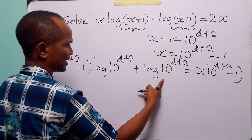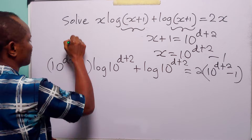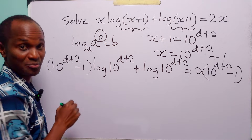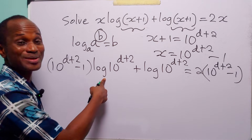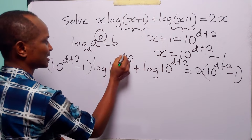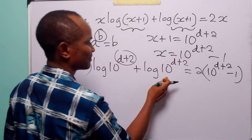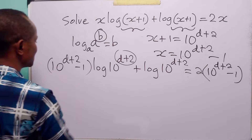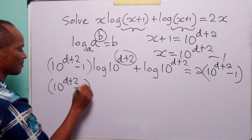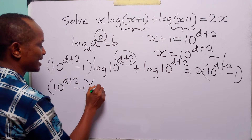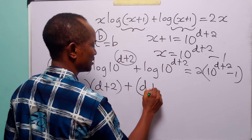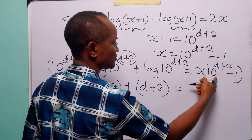Remember that log to base a of a to the power b is equal to b. Here, we have log to base 10 of 10 to the power d plus 2, so this whole thing is equal to d plus 2. The same applies to the other log term. So this equation simplifies to 10 to the power d plus 2 minus 1, multiplied by d plus 2, plus d plus 2, equals 2 times 10 to the power d plus 2 minus 1.